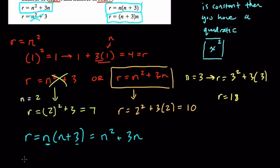And so does this one. Right? n plus three times n. Again, distributive property. n times n is n squared. n times three is three n. We're done.